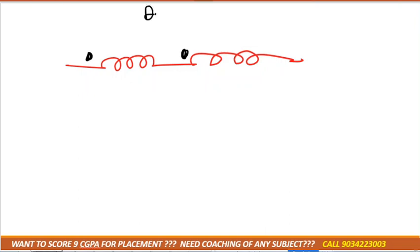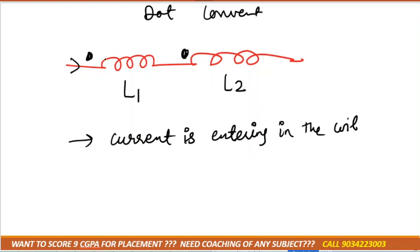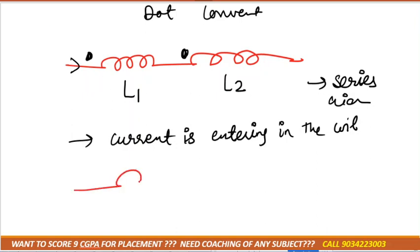We'll look at the dot convention. There are two inductors, L1 and L2. Both dots are on the same side, which means the current is entering both coils — current is entering L1 and also entering L2. Since both currents are entering, this is known as a series aiding connection.